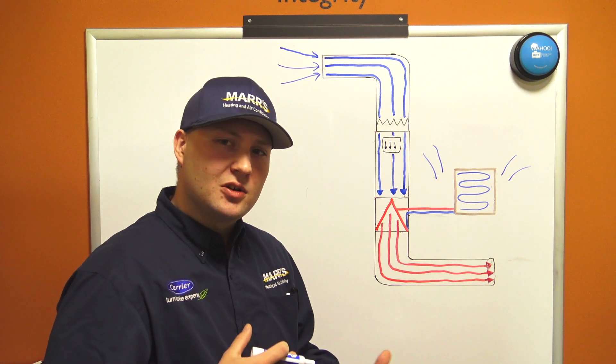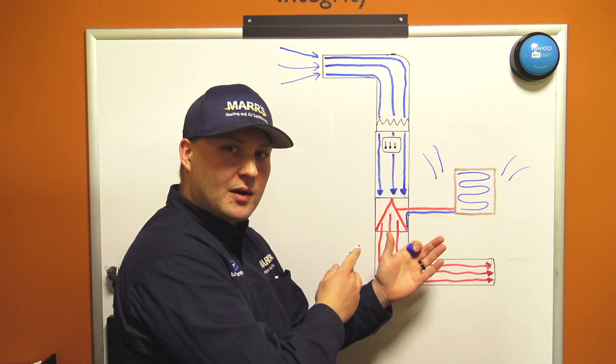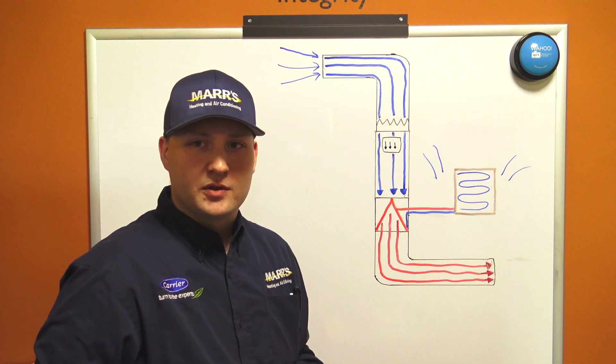That's the main difference between a heat pump and an air conditioner - a heat pump has a reversing valve that allows us to flow that refrigerant both ways and reverse the process. And that is how a heat pump works.